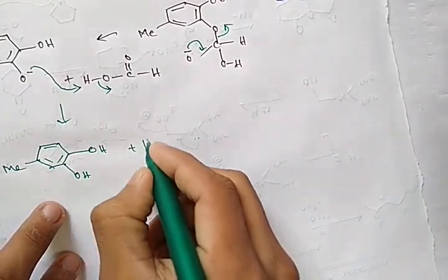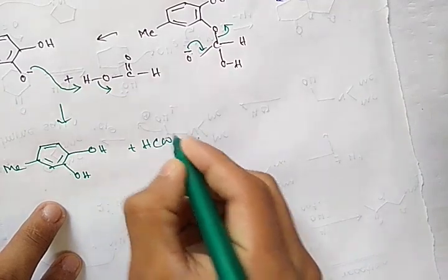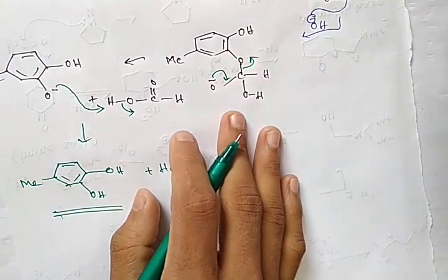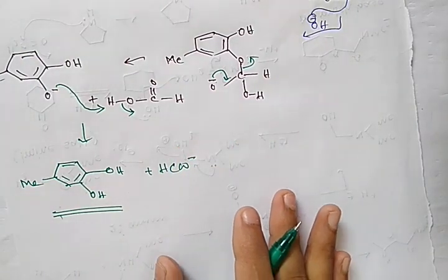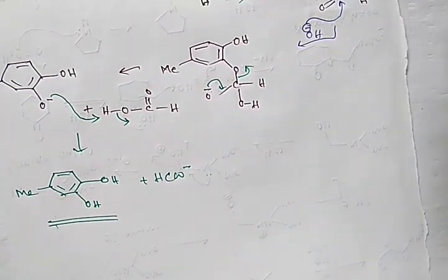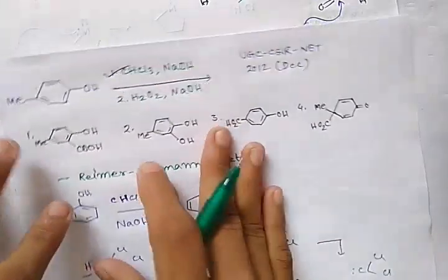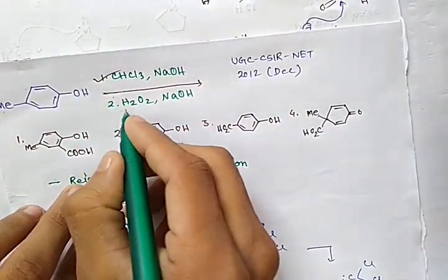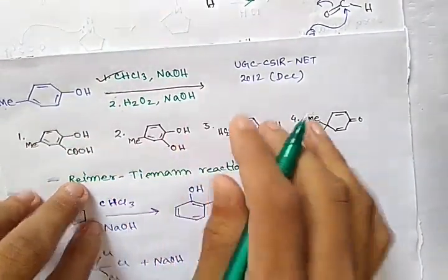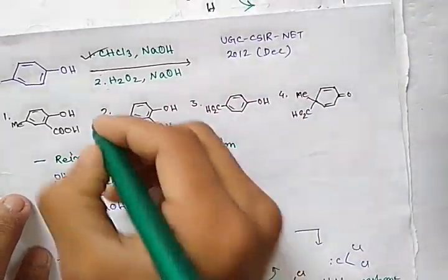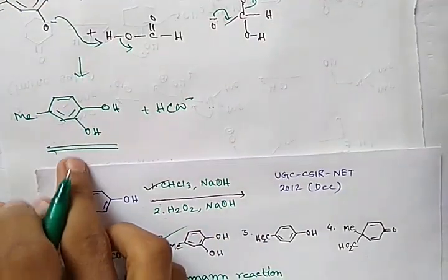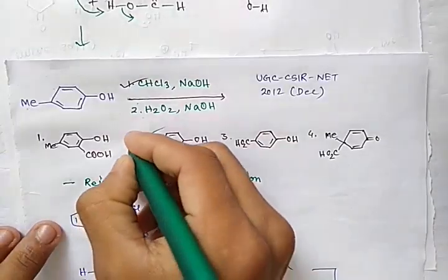So we get the final product, which is the correct answer. When para-cresol is treated with chloroform in the presence of base followed by hydrogen peroxide in the presence of base, the product is this one — a hydroxylated methyl phenol (para-cresol oxidized at the aldehyde to give a diol/hydroxyl product). Thanks.